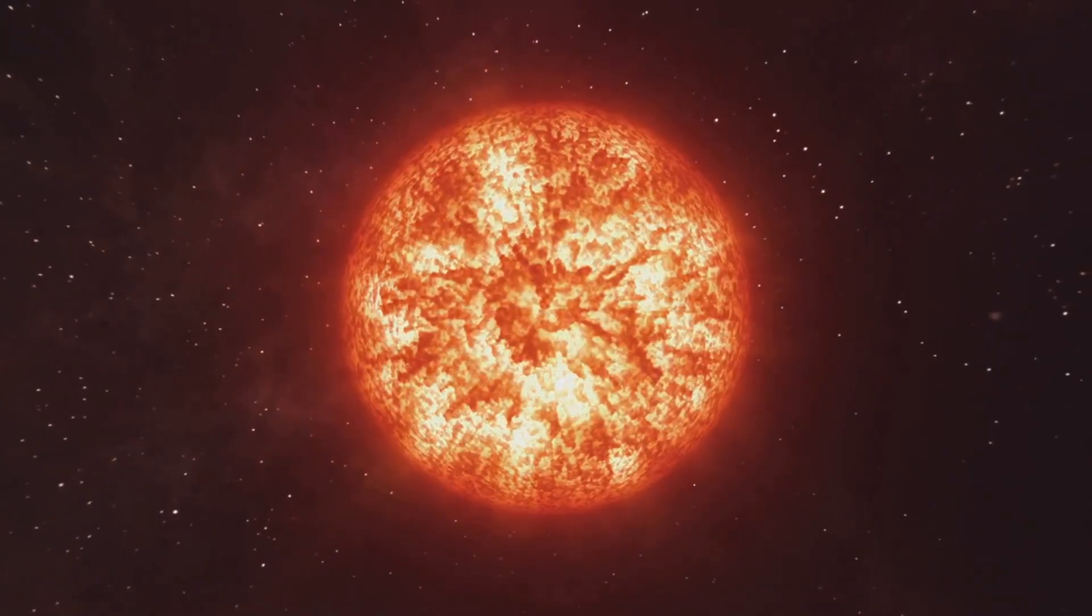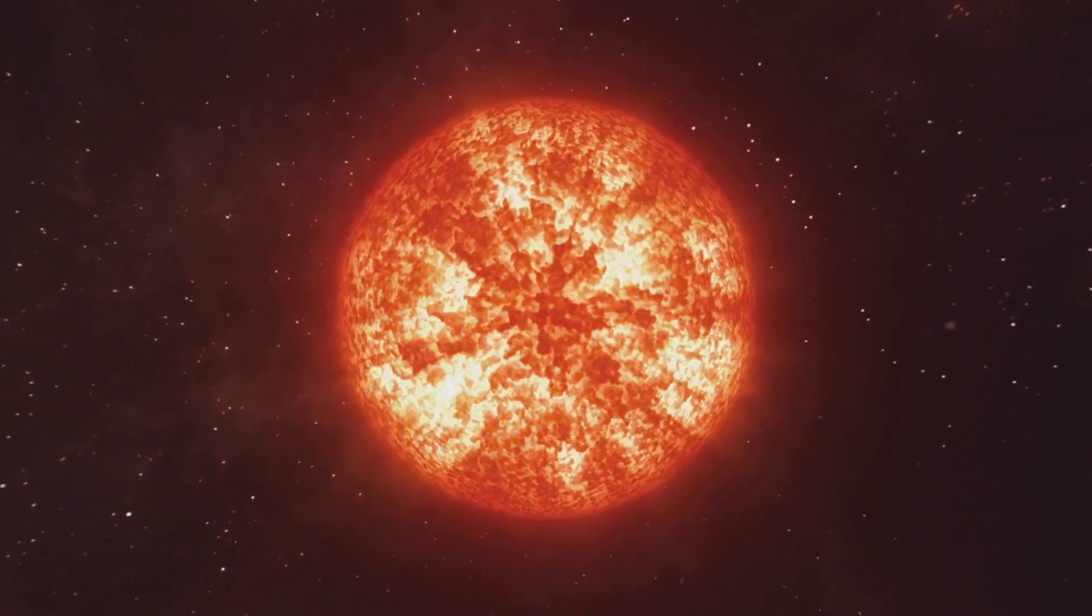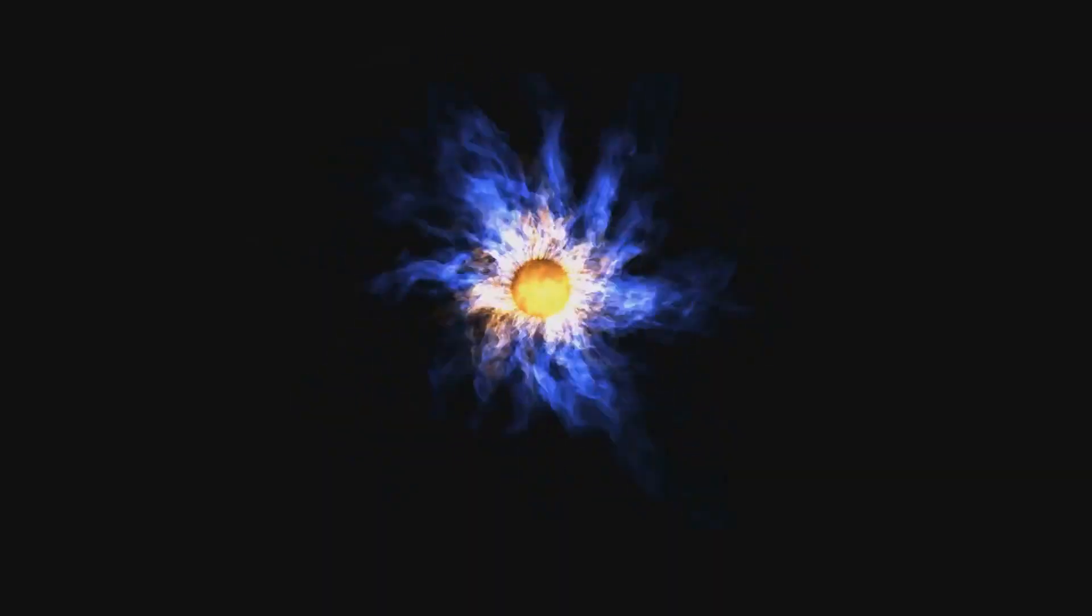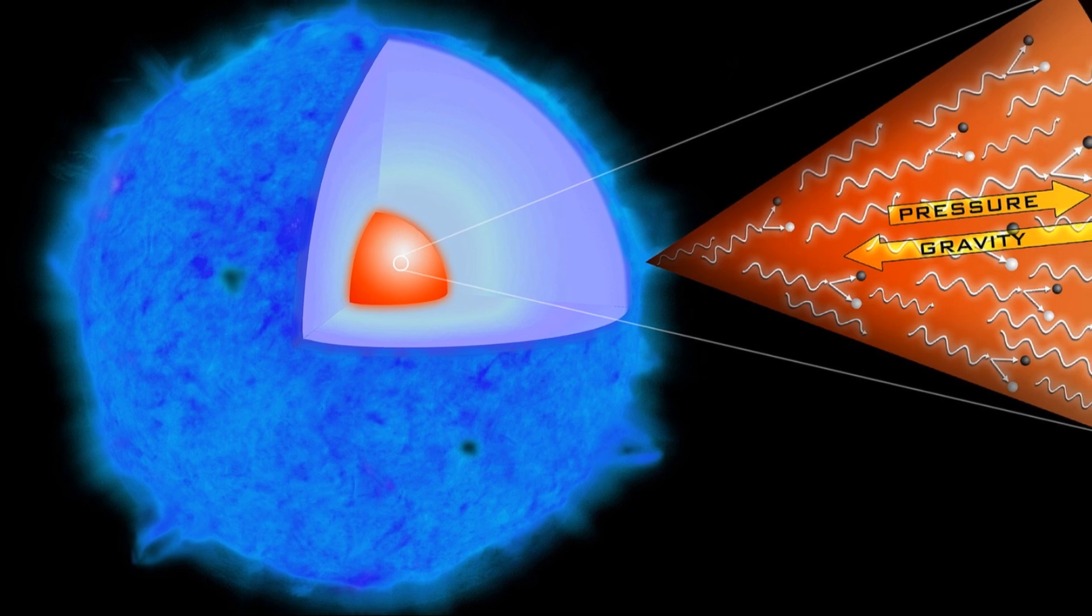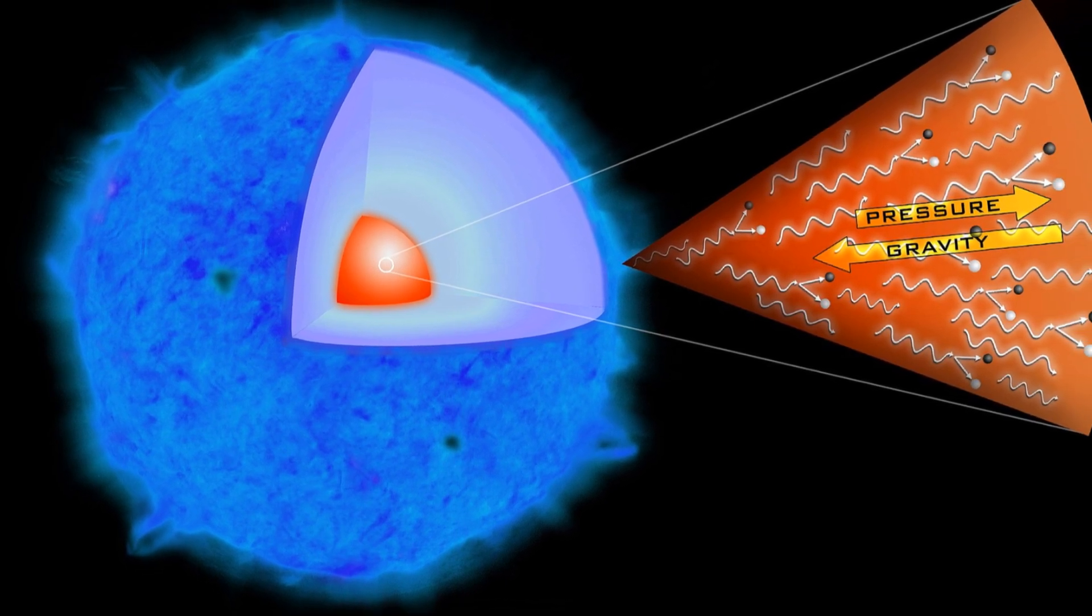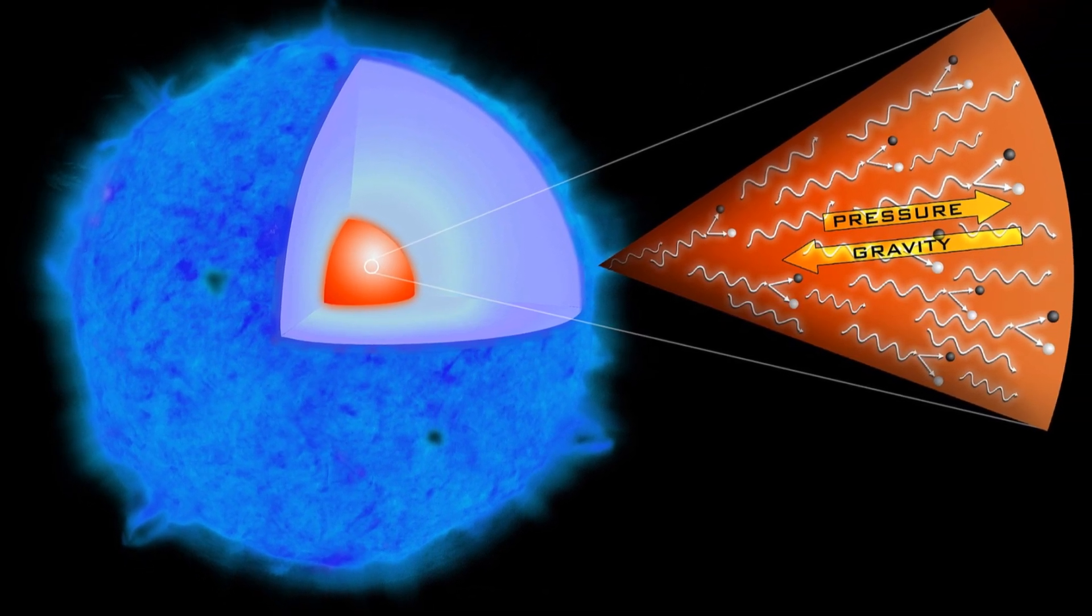To understand a hypernova, let's first break down how stars evolve and explode. Stars go through several stages of life. When a star runs out of fuel in its core, it can no longer maintain the balance between gravity pulling inward and the pressure from nuclear fusion pushing outward.